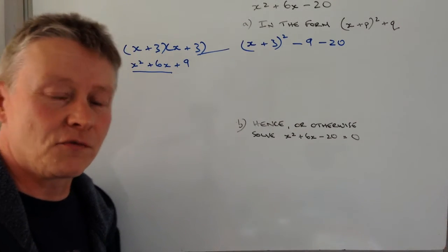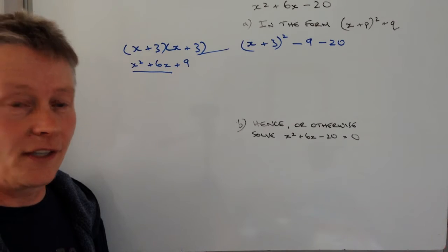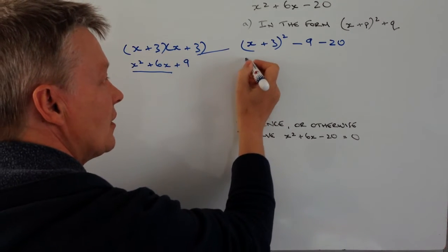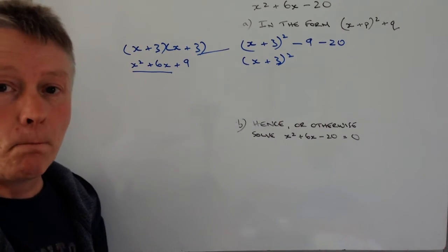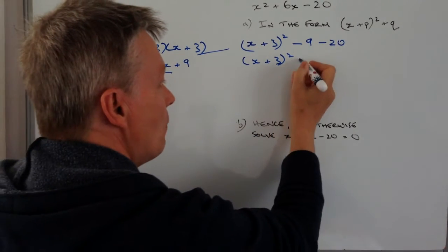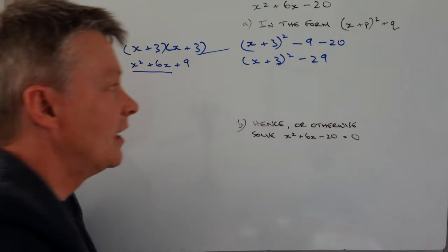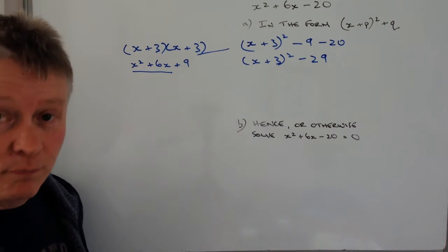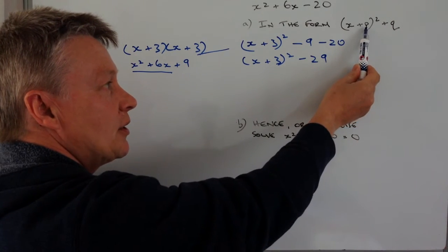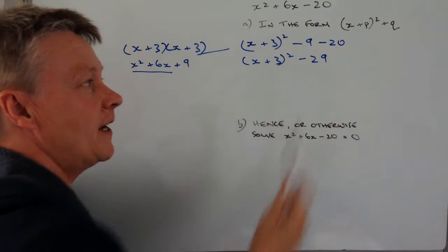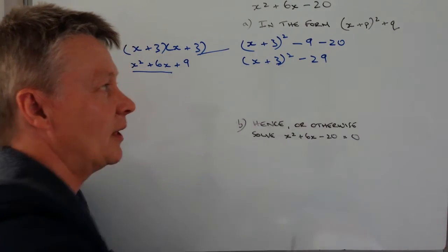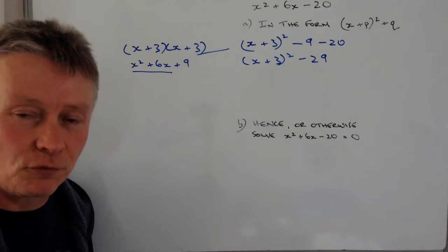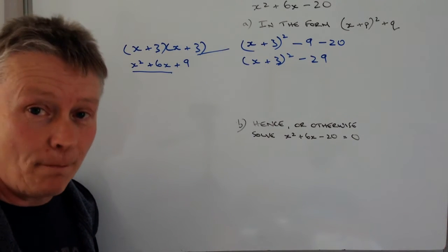Then it's just really a case of tidying this up. I'm going to leave this as (x + 3)² and I've got -9 - 20 is -29. So in other words, the value of p in this particular equation is going to be positive 3, and the value of q is going to be -29. And you might be expected to write that on the actual exam paper.